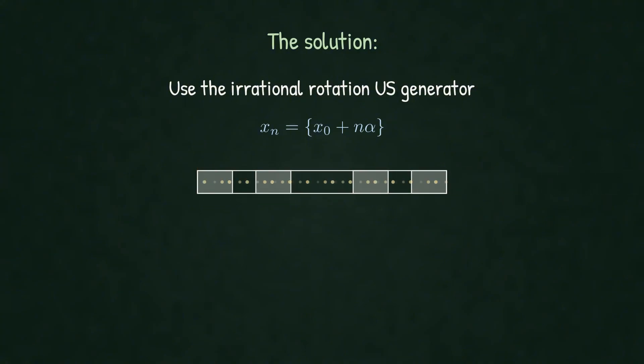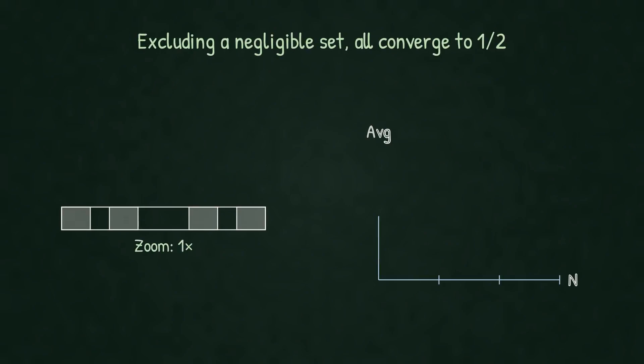But for almost every x0, meaning for all except a negligible set, the sequence not only spreads out uniformly, but also converges to the correct limit. Watch the convergence. Multiple sequences all converging to the same value. As we add more points, even zooming into the fractal structure, they all converge to one half. The problem is solved. By using a structured generator and removing a negligible set, we get consistent, well-defined integration.